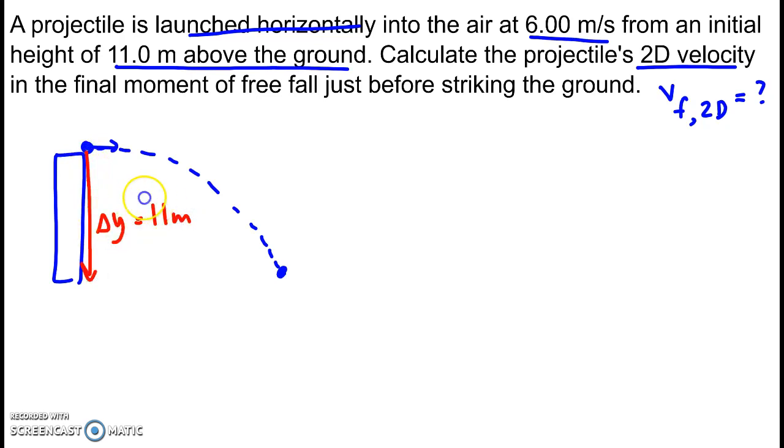Because delta y is downward, we need to add a negative. Negative 11 meters. It's traveled forward some amount, delta x. But what about the velocity?